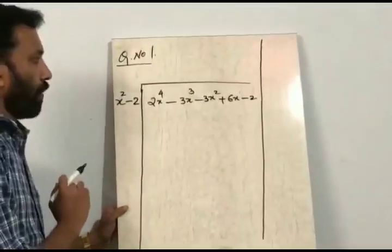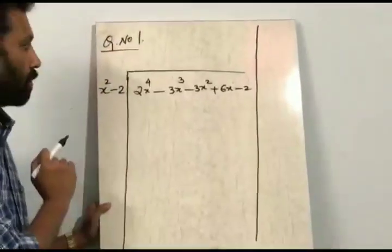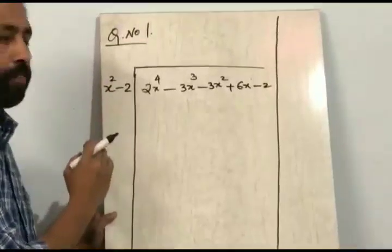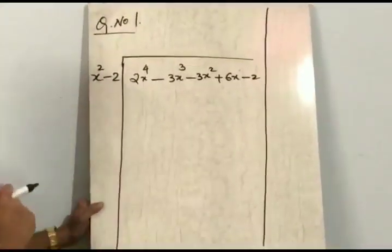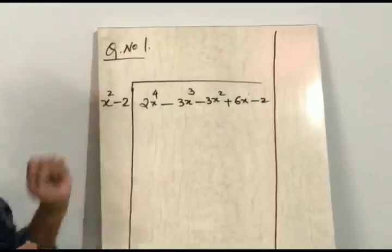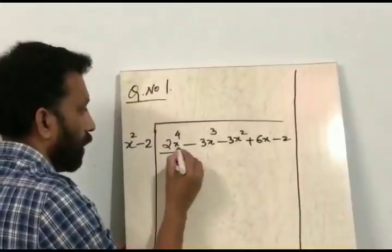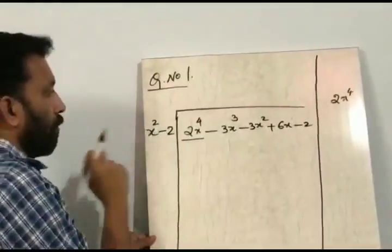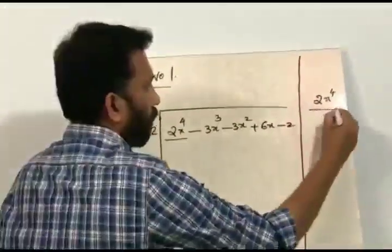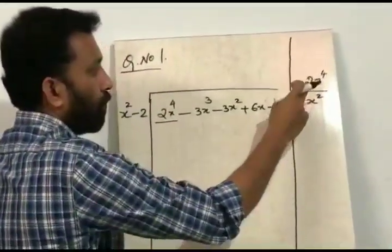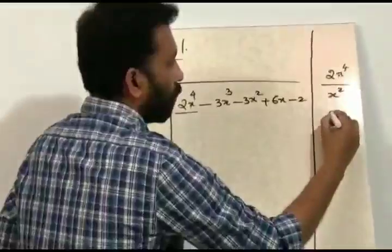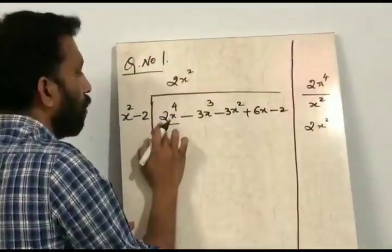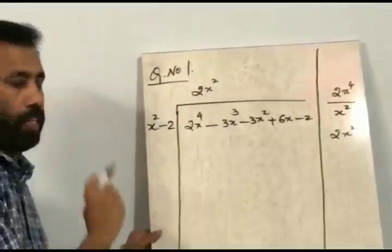Question number 1: find the quotient and the remainder. Also check whether g of x is a factor of p of x. To get the first term of the quotient, here the first term is 2x to the power 4. The first term of the divisor is x squared. When we divide 2x to the power 4 by x squared, we get 2x squared. That is, 2x squared is the first term of the quotient.